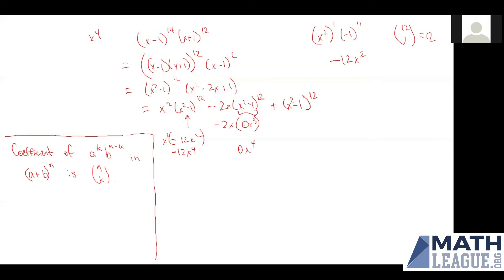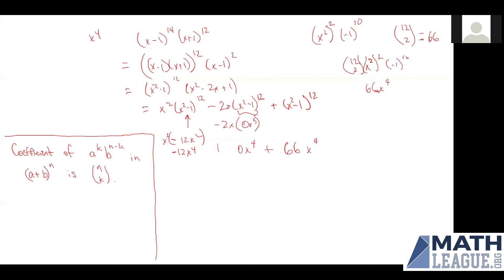For the last term, we want the coefficient of x to the fourth in (x squared minus 1) to the 12th. x to the fourth is just (x squared) squared times (negative 1) to the 10th. Using the binomial theorem with k equals 2, that's 12 choose 2, which is 66. So we have 66 times (x squared) squared times (negative 1) to the 10th, giving us 66x to the fourth. The total coefficient of x to the fourth across the entire polynomial is negative 12 plus 0 plus 66, which gives us 54.